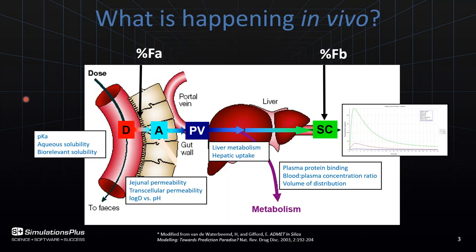AdMet Predictor, as the name implies, calculates AdMet properties to simulate PK properties in vivo. If we take an orally dosed compound — say an immediate release tablet — it will dissolve in the stomach and work its way down the GI tract. Since the stomach pH is much lower than the pH in the rest of the GI tract, the PK of the molecule is very important and is related to aqueous solubility and biorelevant solubility, all models which are in AdMet Predictor. As the molecule dissolves and works its way down, it can be absorbed into the gut wall.